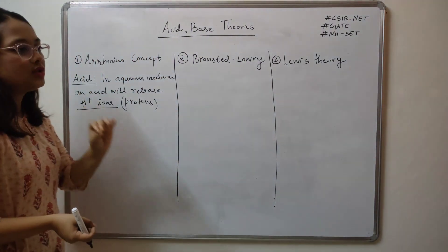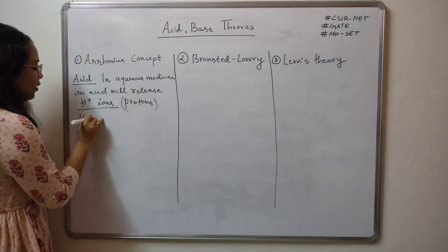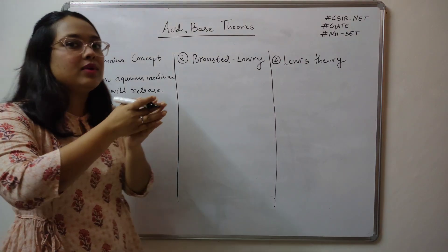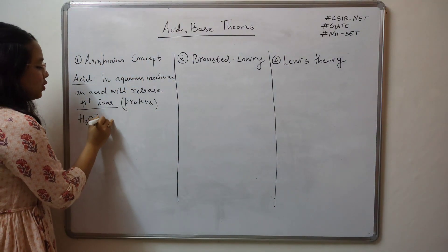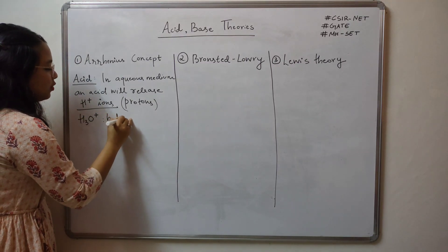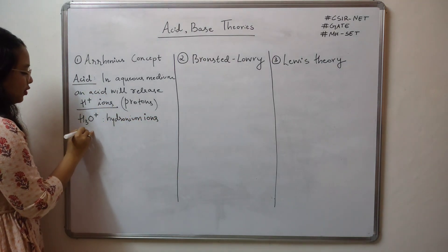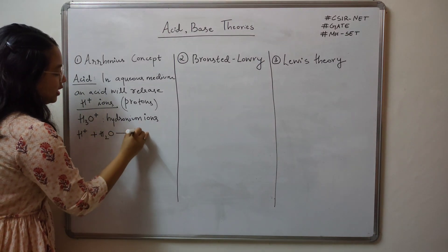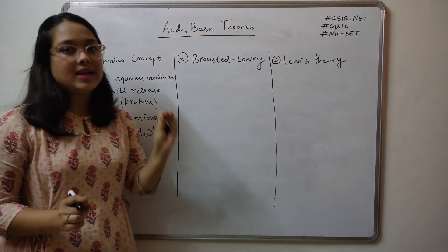When we consider water as a solvent, H+ ions will exist as H3O+ ions. H+ ions will go and combine with your H2O molecules. So in the solution we will have H3O+ ions, which are known as hydronium ions. That is when the proton is released in water — H+ will associate with water in order to give you H3O+.